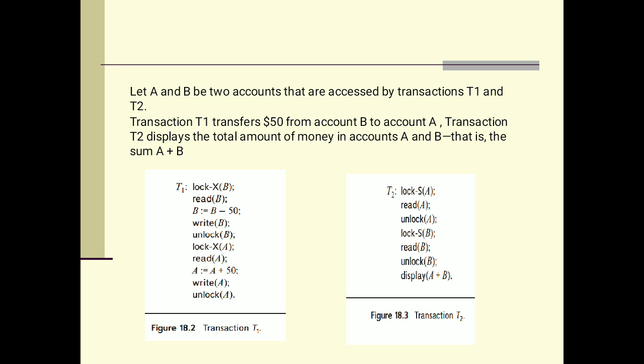Now we will see one example. Let A and B be two accounts that are accessed by transactions T1 and T2. Transaction T1 transfers $50 from account B to account A. Transaction T2 displays the total amount of money in accounts A and B, that is, the sum of A and B.